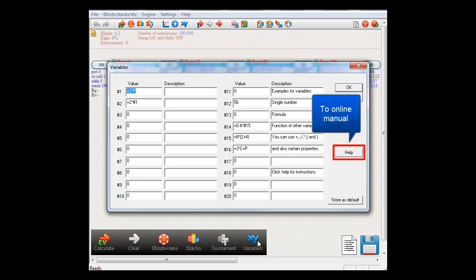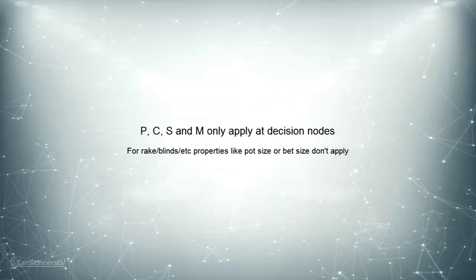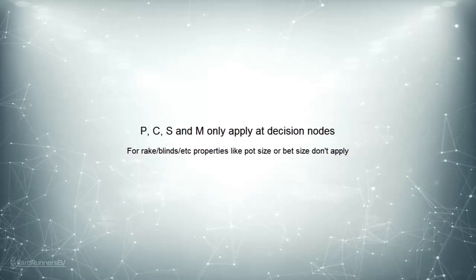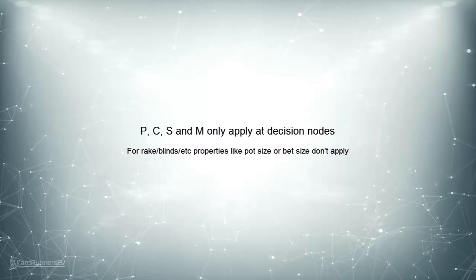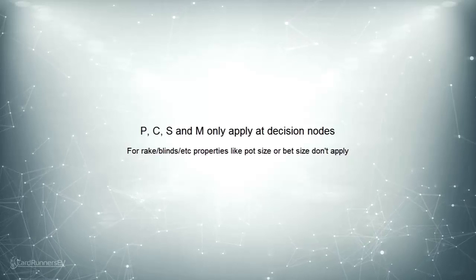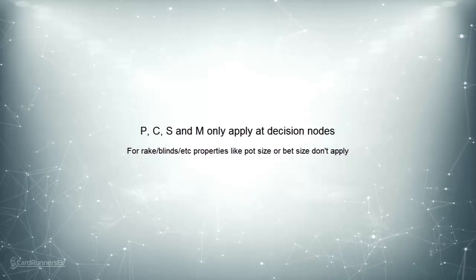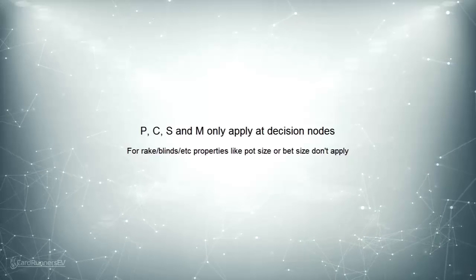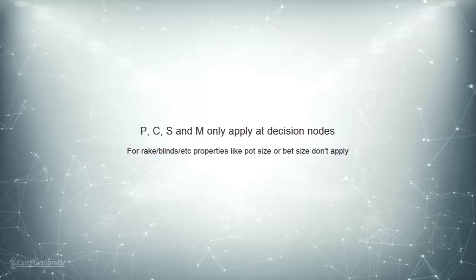For a summary of the available operators, please click the help button here to be taken to the website. Please observe that the operators P, C, S, and M can only be used for variables in decision nodes. You can't use them for, for example, the blinds, since at the time of posting the blinds, a property like pot size doesn't apply yet. After all, the hand hasn't started yet, so there's no pot at this point in time.